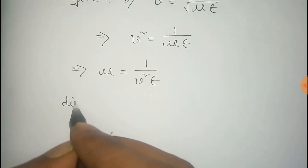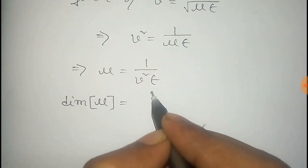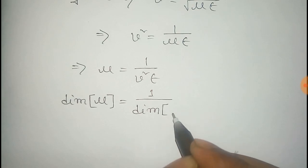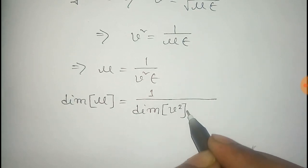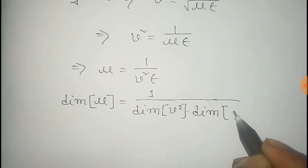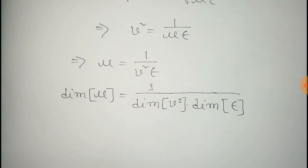Now we have to find the dimension of mu. So, dimension of mu is equal to 1 by dimension of v square into dimension of epsilon. First of all, find the dimension of v square.